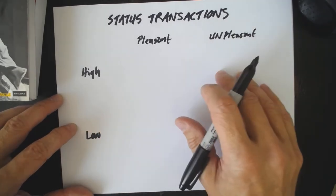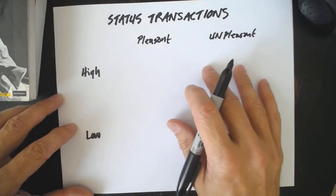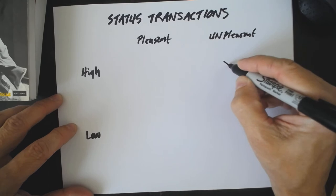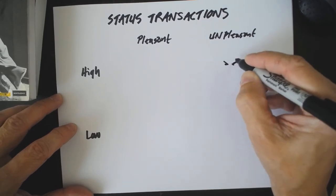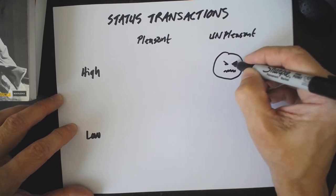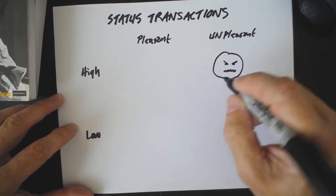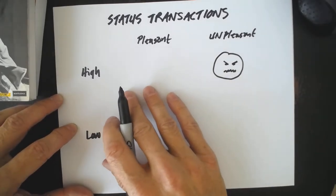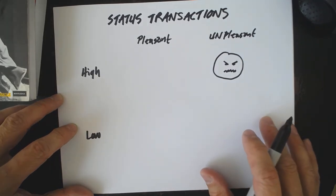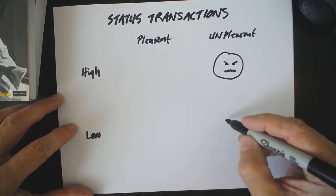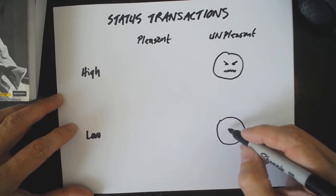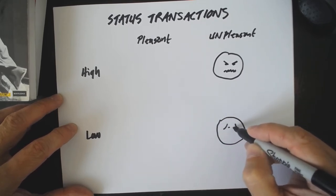For example: high status, unpleasant — 'don't bite me, I bite back.' That would be unpleasant high. Threatening. But you might say 'don't bite me, I don't taste very good' — and that would be an example of unpleasant low.